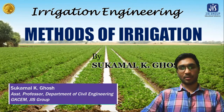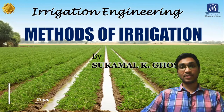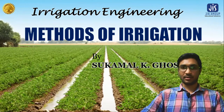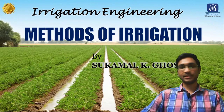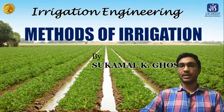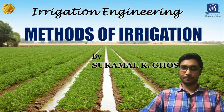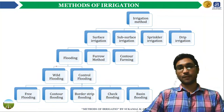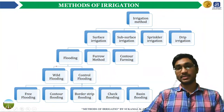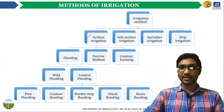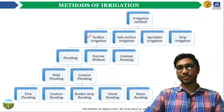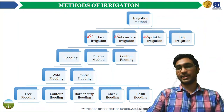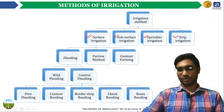In our last lecture, we discussed the various types of irrigation. Now, in this particular video lecture, we are going to discuss about the methods or techniques of irrigation. Basically, there are four irrigation methods: surface irrigation, subsurface irrigation, sprinkler irrigation, and drip irrigation.